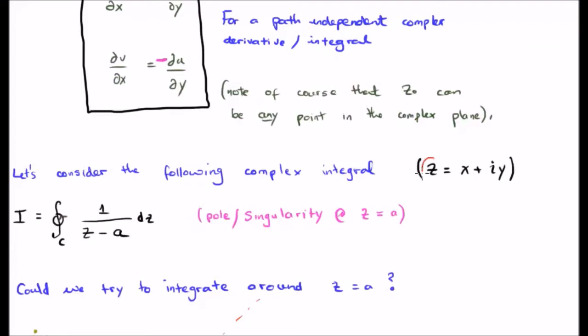Of course, z is a complex number which has a real component x and an imaginary component y. Note that the Cauchy integral theorem does not apply because there is a singularity or a pole at the point z equals a. If you plug z equals a here, you're going to get a divide by zero scenario, which is infinity or not even really defined. So the Cauchy integral theorem doesn't work and we're not going to get zero.